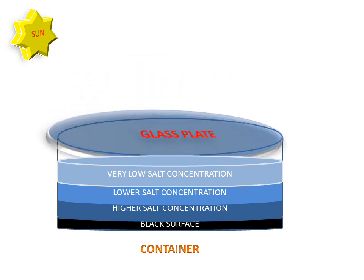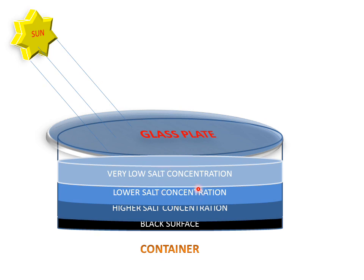The glass plate covers the whole container to form the solar pond. When rays come from the sun, heat is collected in the water and the water gets hot. The glass plate covers the whole container so that heat loss does not take place. In this container we can collect hot water, and this heated water is further used for electricity generation.